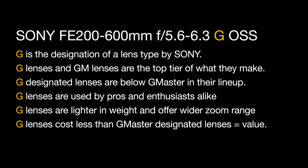G is the designation of the lens type by Sony. G lenses and G Master lenses are the top tier of what they make. G designated lenses are below G Master in their lineup, but G lenses are used by pros and enthusiasts alike. G lenses are often lighter in weight and offer a wider zoom range than G Master lenses, and they cost less — so sometimes they represent a better value.